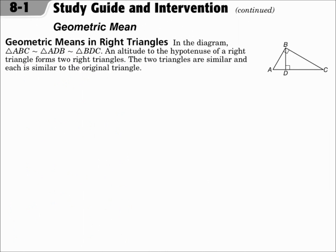Geometric Means in Right Triangles. In the diagram, triangle ABC is similar to triangle ADB, which is similar to triangle BDC. An altitude drawn to the hypotenuse of a right triangle forms two right triangles. The two triangles are similar, and each is similar to the original triangle.